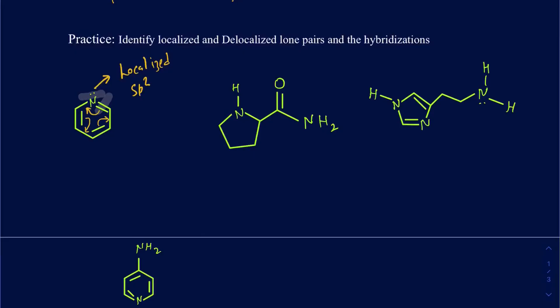The hybridization is going to be sp2. The structure has only two bonding domains and one lone pair, so it's still going to be bent around that nitrogen.